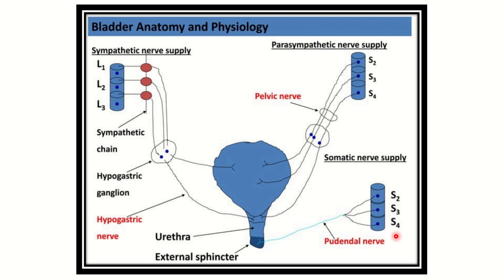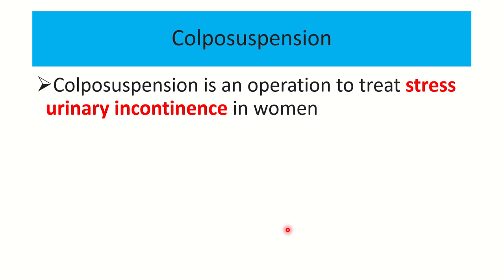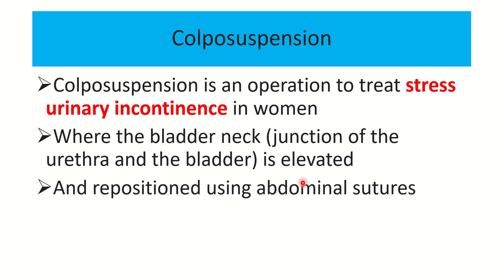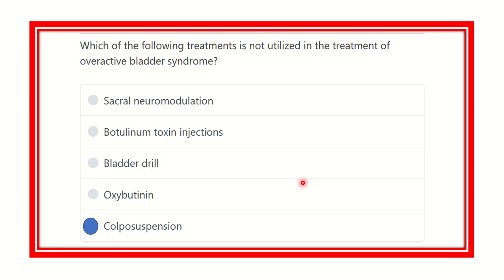The pudendal nerve, which is S2, S3, and S4, is responsible for voluntary control of our urethral sphincter. When we wish, this pudendal nerve acts and urination occurs. Colposuspension is an operation to treat stress urinary incontinence in women, where the bladder neck is elevated and repositioned using abdominal sutures, usually placed through a cut in the lower abdomen.